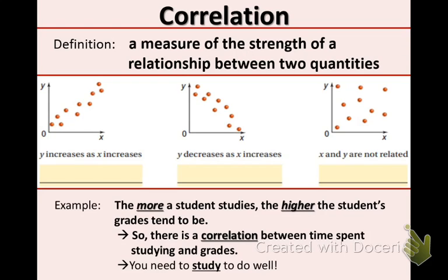Correlation is a measure of the strength of relationship between two quantities. So x and y are the quantities and there is a correlation or a relationship between the two quantities. The first one located on the left side, as y increases, x increases and vice versa. You can see that the data points are going up generally. Just like a positive slope, this is called a positive correlation.